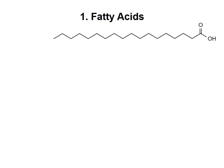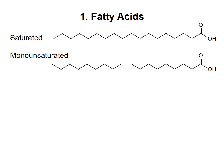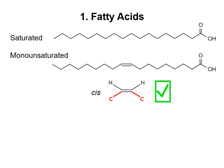The fatty acid shown here has 18 carbons. If the hydrocarbon chain has no double bonds, it is called saturated, meaning you can't fit any more hydrogen atoms on the chain. If it has one double bond, it's called monounsaturated. The first carbon-carbon double bond added to fatty acids is usually added between carbons 9 and 10, counting from the carboxylic acid end. Double bonds in fatty acids are almost always cis and not trans.